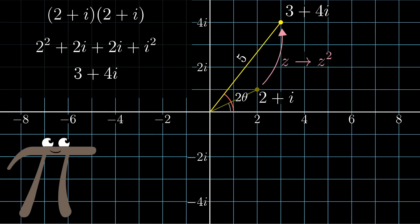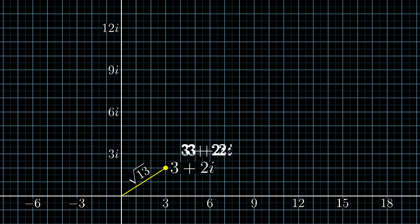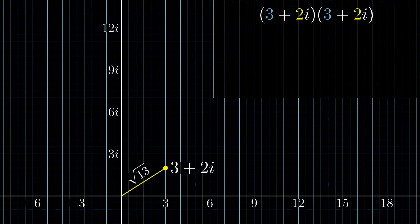Here, let's try it with another example. Start off with some complex number that has integer coordinates, like 3 plus 2i. In this case, the distance between this number and the origin is the square root of 3 squared plus 2 squared, which is the square root of 13.